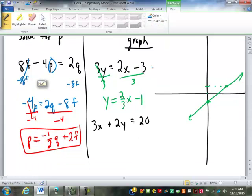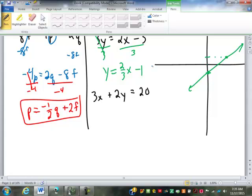This next one down here, we have to get y alone still. Where do we start? Subtract 3x. So 2y equals 20 minus 3x. Then what? Divide by 2. So y equals 20 divided by 2 is 10, and then negative 3x divided by 2 is negative 3 over 2 x.